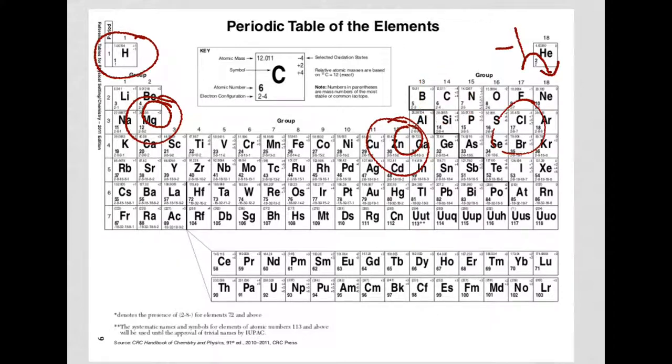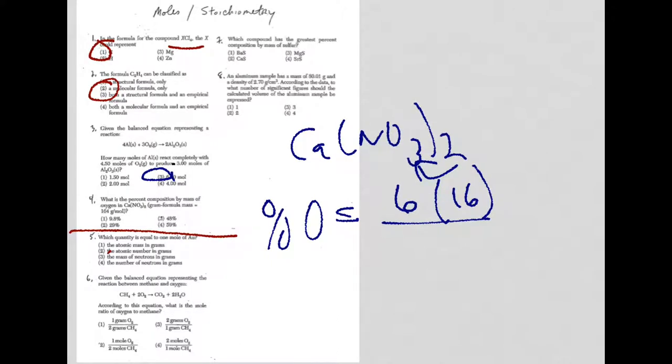You find that here on the periodic table. If we look at oxygen, let me just get rid of this so you can see it. It's right here. I just rounded it to 16. And the whole thing, of course, is the gram formula mass, 164 on the bottom times 100. You do the math here. Multiply, divide by 164, multiply by 100, and you're going to get a percent of 59 percent.